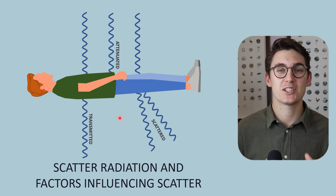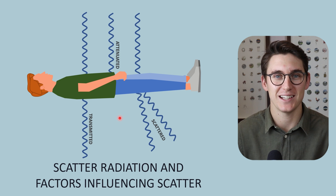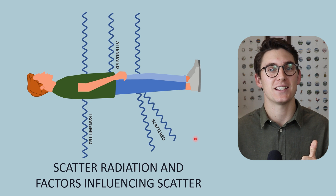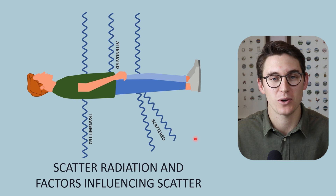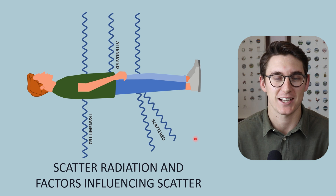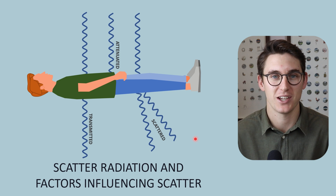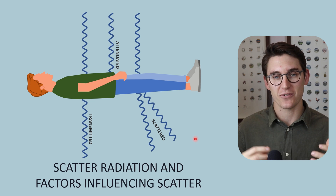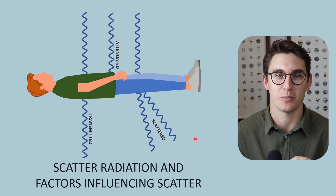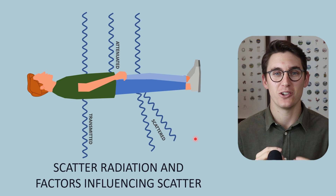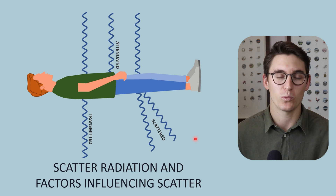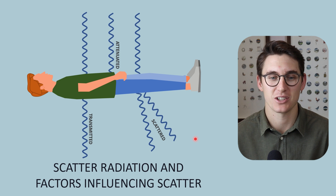In the next three talks we're going to be looking specifically at scatter. We'll look at what scatter is and how it contributes to our image, and in this talk the various factors that influence the amount of scatter. Then in the next talk we'll look at factors we can manipulate to reduce scatter, and finally we'll look closely at anti-scatter grids and how they affect the way we take our radiographs.